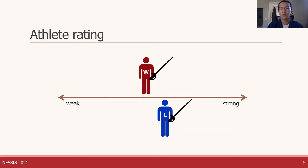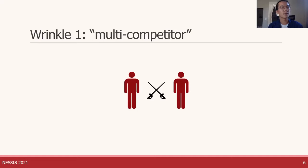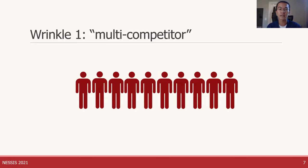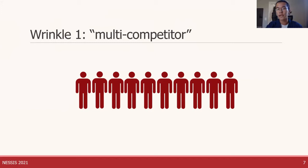This broad range of events introduces two wrinkles not addressed by standard methods like ELO. The first wrinkle is that many Olympic sports have many competitors in each event, not just two. Instead of a head-to-head game like fencing, you might have the mile run where a bunch of athletes compete at the same time, or diving where you compare results across many athletes. This means we generally don't just get a single winner and loser — instead, we get outcomes for each competitor and have to figure out how to translate those into ratings.